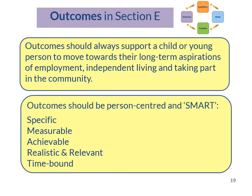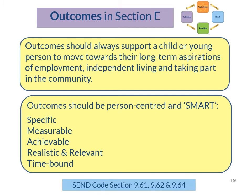Outcomes should be person-centred and SMART. This means they should be Specific — so no one is in any doubt what they mean. They should be Measurable — so think about how your child's progress towards the outcome can be tracked. They should be Achievable — so an outcome should be challenging but not impossible to achieve within the agreed timeframe. They should also be Realistic and Relevant — so is the target worthwhile and in line with your child's aspirations? And outcomes should be Time-bound — in other words, there is an agreed time limit for the outcome to be achieved.